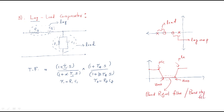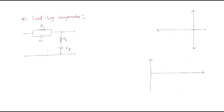For particular frequencies the signal is stopped, which is why it is called the band reject filter. In summary: the lag section is a series combination of resistor and capacitor, and the lead section is a parallel combination of resistor and capacitor. The next compensator to discuss is the lead-lag compensator.